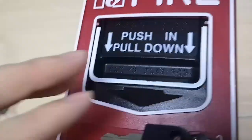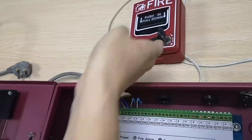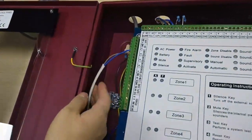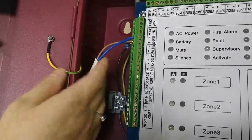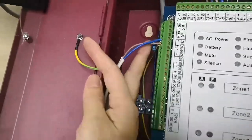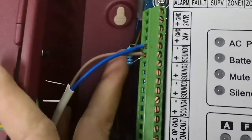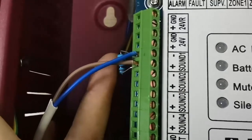Okay. For the output, we already add a strobe siren. You can see in the panel, there is already connected a resistor. We need to take it off.